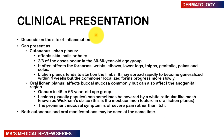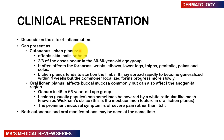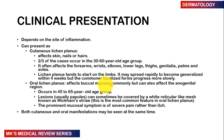The clinical presentation of the condition largely depends on the site of inflammation. We can characterize it into two main groups: cutaneous lichen planus and oral lichen planus. Cutaneous lichen planus affects the skin, nails, and hair, commonly seen in people aged 30 to 60 years. The forearms, wrists, elbows, lower legs, thighs, genitalia, palms, and soles of the feet are often affected. Lichen planus tends to start on the limbs and may progress rapidly to become generalized within about four weeks, though more common localized forms progress more slowly.